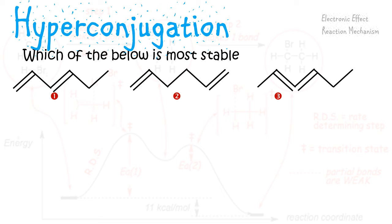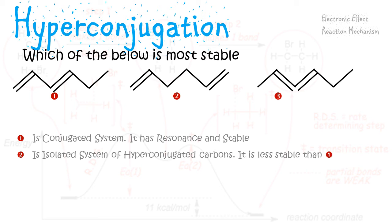Here, one is a conjugated system. The double bond can shift here, this double bond can shift here. This is called a conjugated system. It has resonance and it is stable. Two is an isolated system of hyperconjugated carbons. So this can shift here and this can shift here, and that's it.